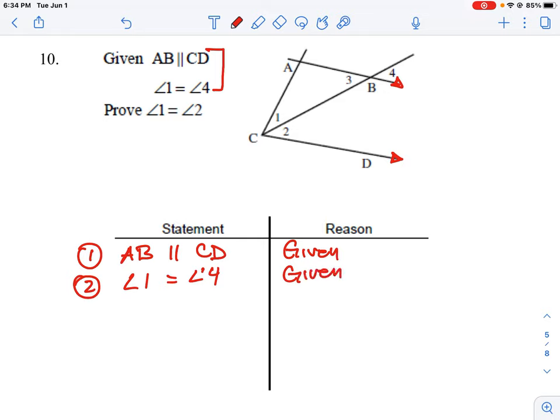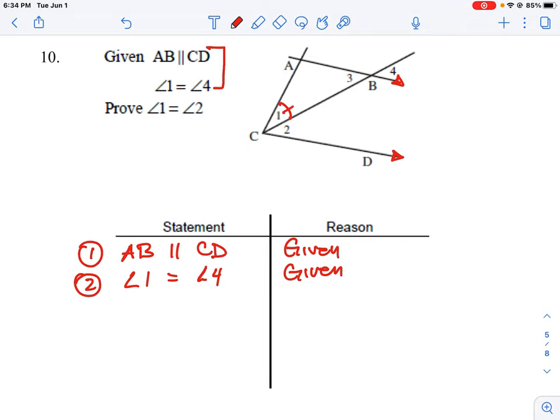Okay, and we can start with that. Let's just mark that in here. So angle 1 is equal to angle 4. Okay, so we want to prove angle 1 is equal to angle 2. That's going to be our last statement that we want to get to.